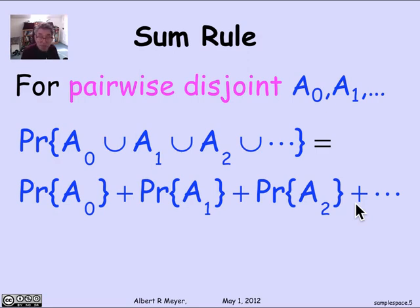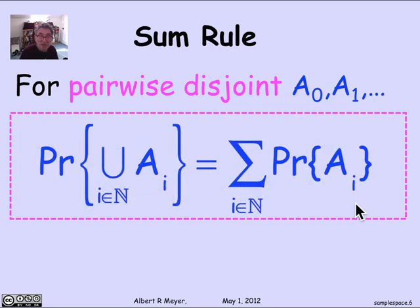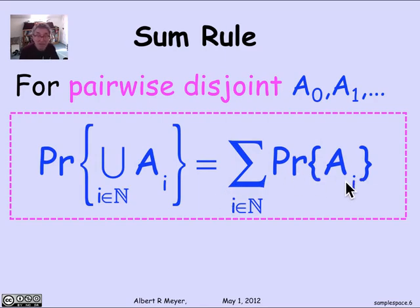In some more general approaches to probability, this is actually taken as an axiom — it's the axiom that defines a probability space, where you start with an assignment of probabilities to events. But in the discrete case, we don't have to worry about that; it's a corollary of the way we define probability. This is the sum rule — sometimes called the countable sum rule. Expressed concisely: the probability of the union of the A_i's as i ranges over the non-negative integers is simply the sum of the individual probabilities of those events.